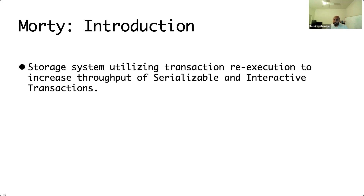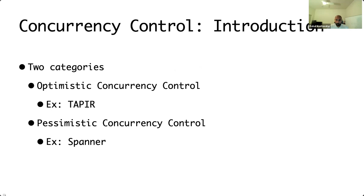Serializability gives the illusion of sequential execution, thereby helping developers to reason about application code. On the other hand, interactive transactions allow mixing application code and transaction code, allowing developers to freely express their code.